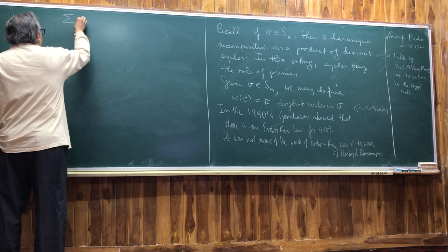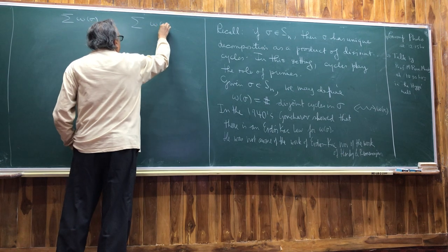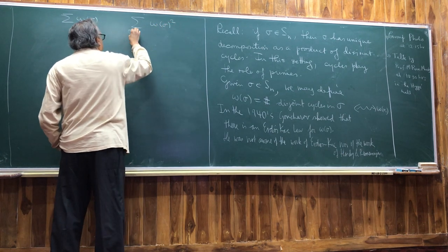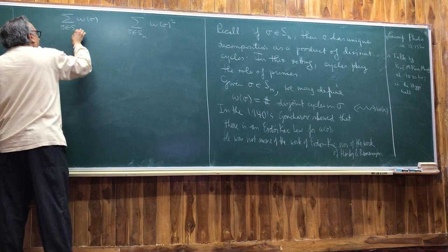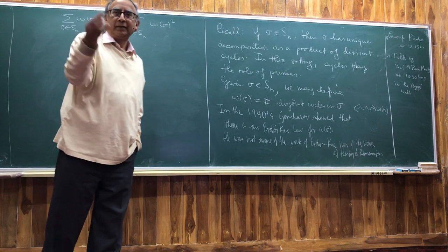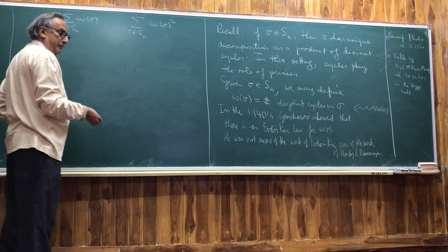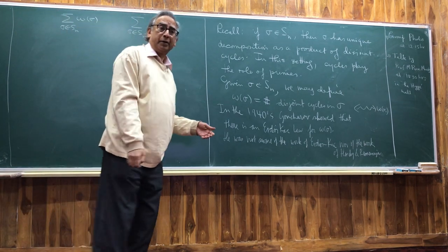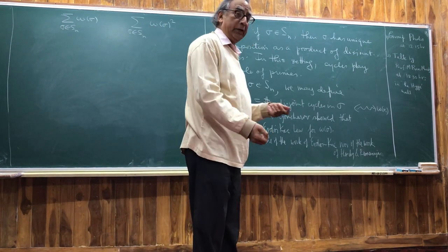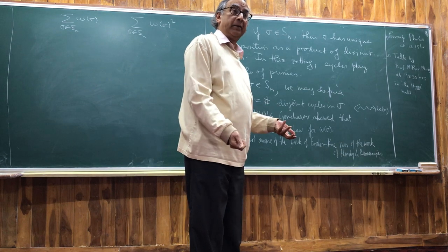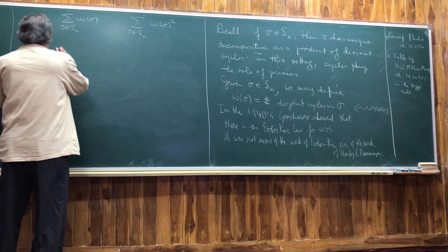What does that suggest? Well, we have to calculate sum of omega(sigma) and sum of omega(sigma)^2, as sigma runs through the permutations, and see what these are. These are things that everyone in this room can see you have to do in order to find the normal order — what is the mean value, what do you expect the variance to be — and then guess the distribution.